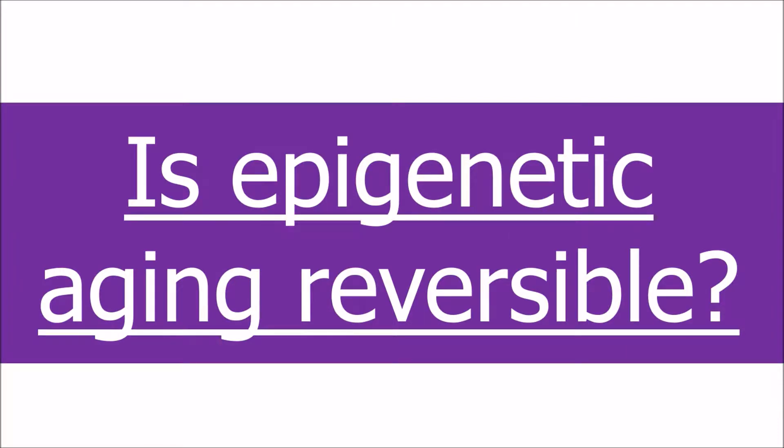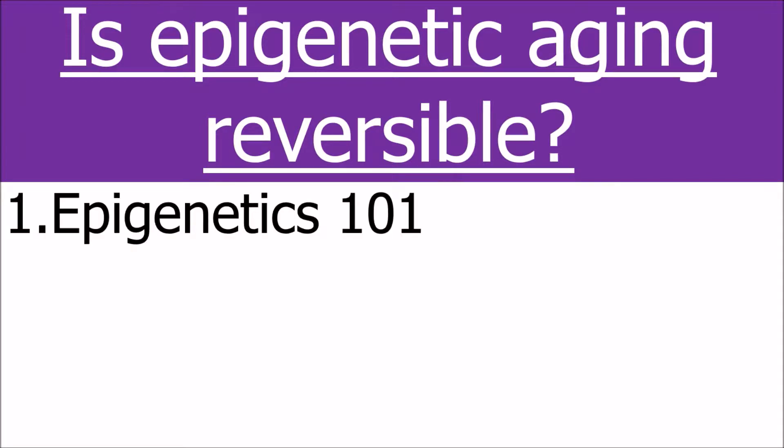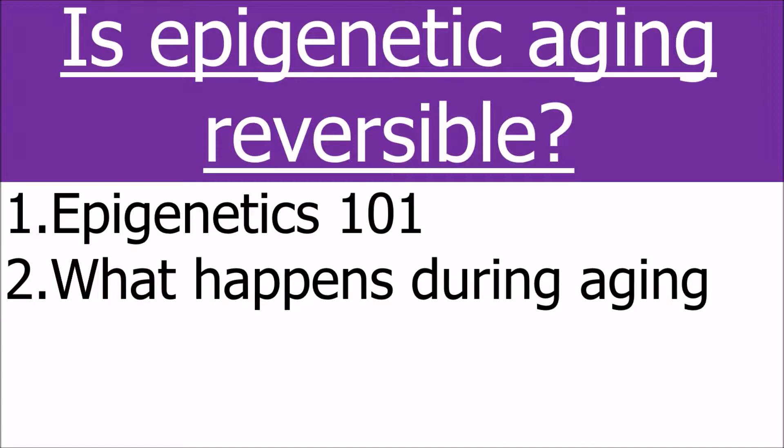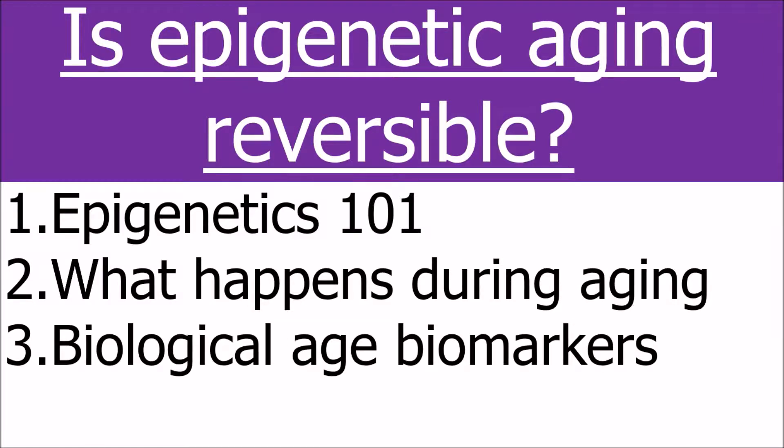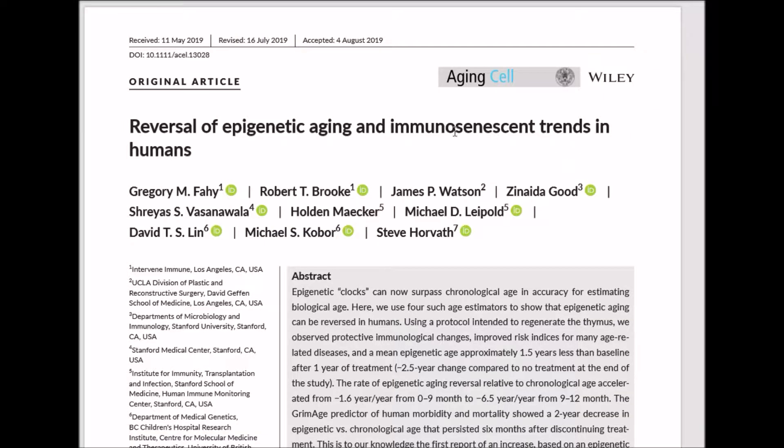Understanding aging is a really exciting topic right now, with age being a major risk factor for multiple morbidities. This video will take us on a journey from understanding the basics of epigenetics to how epigenetics can be used to determine biological age, and whether by modifying epigenetic marks, aging can be slowed or, as seems to be suggested by this recent paper, reversed.